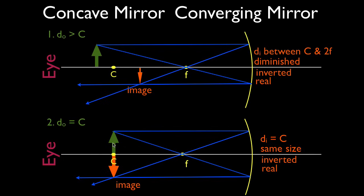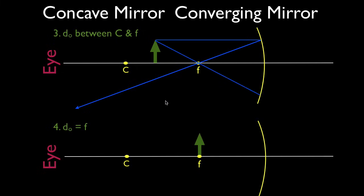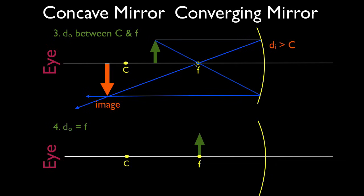Now we move the object so it's between C and F. Drawing the first ray going in parallel and coming out through F, then the second going in through F and coming out parallel — you have to draw it through that point, it's not a random angle. When the object is between C and F, the image distance is greater than C, the image is always magnified, always inverted, and it's still a real image.